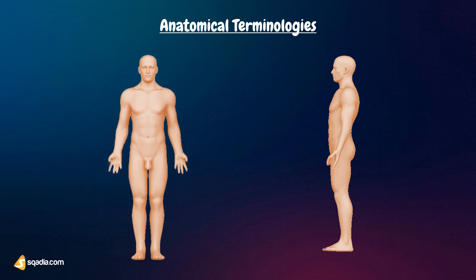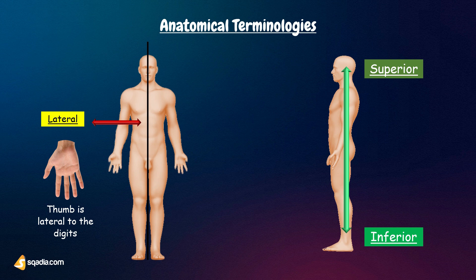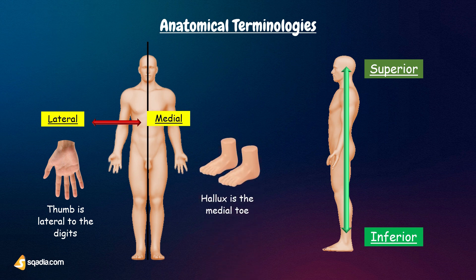Superior or cranial means towards the top of the head. Inferior or caudal means towards the feet. Lateral means away from the midsection of the body — for example, the thumb is lateral to the digits. Medial describes the middle or direction toward the middle of the body. The hallux, or big toe, is the medial toe.